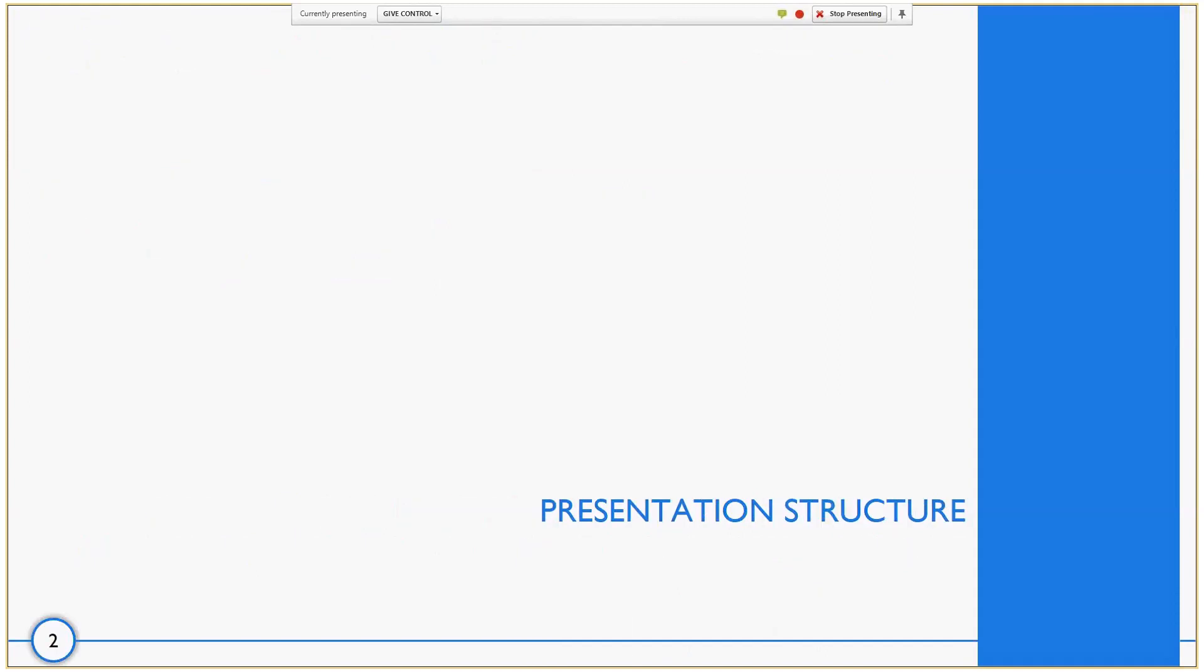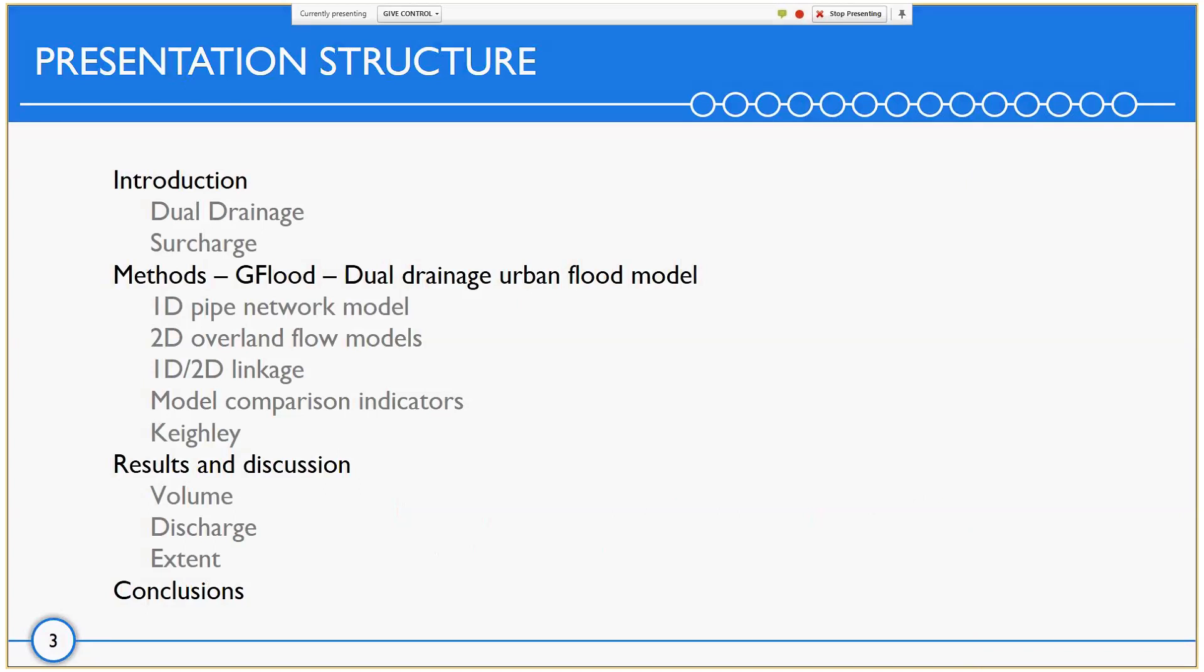I will begin by showing the presentation structure. I'll give a small introduction on what is dual drainage and show some cases where surcharge happens. I will explain methodology followed, namely the sewer model used, all three overland flow flood models and how the connection was done. Then I'll explain the parameters used to compare and evaluate the models and the case study area. Finally, I will show the volume, discharge and extent, the three parameters analyzed to compare all the models and end with the conclusions.